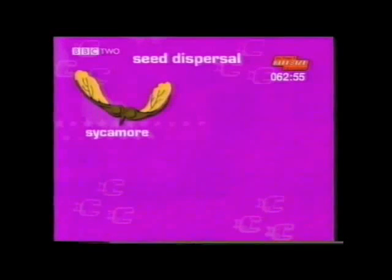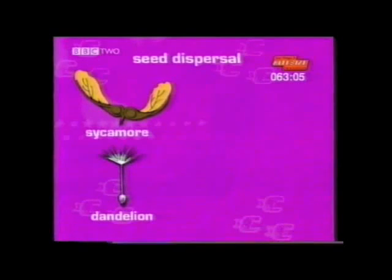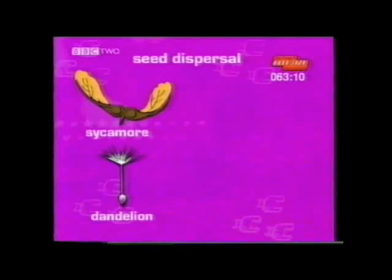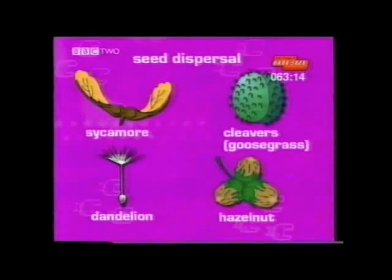After seed formation, the seeds are dispersed — either by the wind (sycamore seeds act like helicopter propellers, and the feathery parachute of dandelion seeds takes them further from the parent plant) — or seeds can be dispersed by animals: the hooks on cleavers attach to animals, and hazelnuts are stored away by squirrels.